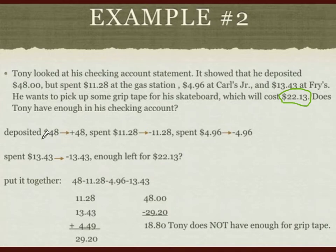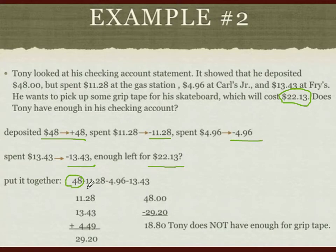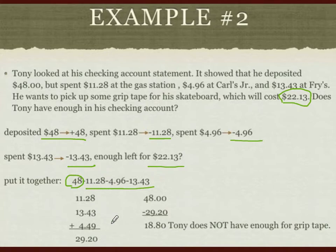Let's list all the given information. He deposited $48 — that's positive. He spent $11.28 — that's negative. Then he spent another $4.96, then another $13.43. The question is whether he has enough to spend another $22.13. What if we add all the positive numbers together and all the negative numbers together? Same signs add — if we add all the negative numbers: $11.28 + $13.43 + $4.96, making sure the place values are lined up, we get a total of $29.67.